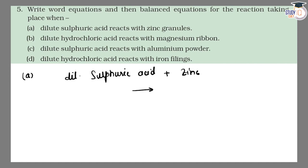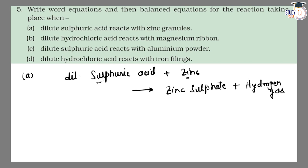This is an acid and metal reaction. In such reactions, the metal replaces hydrogen. So zinc reacts with the sulfate part to give zinc sulfate, and hydrogen is released as hydrogen gas. This is the reaction of metal and acid.